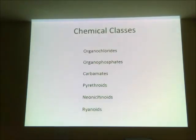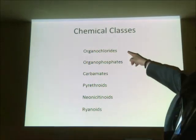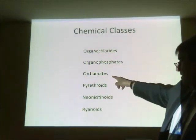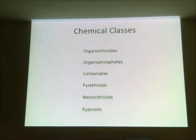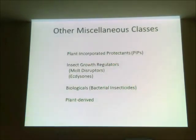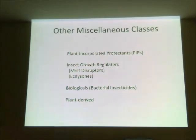These are some of the classes of insecticides — not all-inclusive — including the organochlorides, organophosphates, carbamates, pyrethroids, neonicotinoids, and rhinoids. I'll have something to say about all of these chemical classes. We also have insect growth regulators, which may be either molt disruptors or what are known as ecdysones.